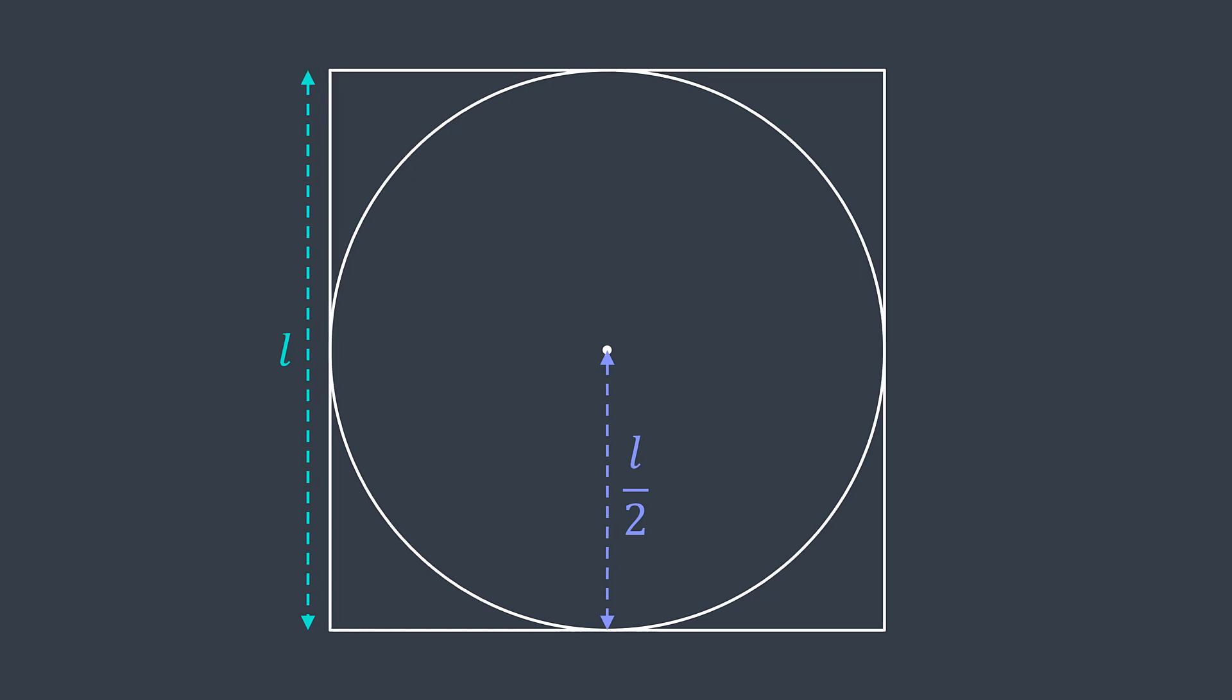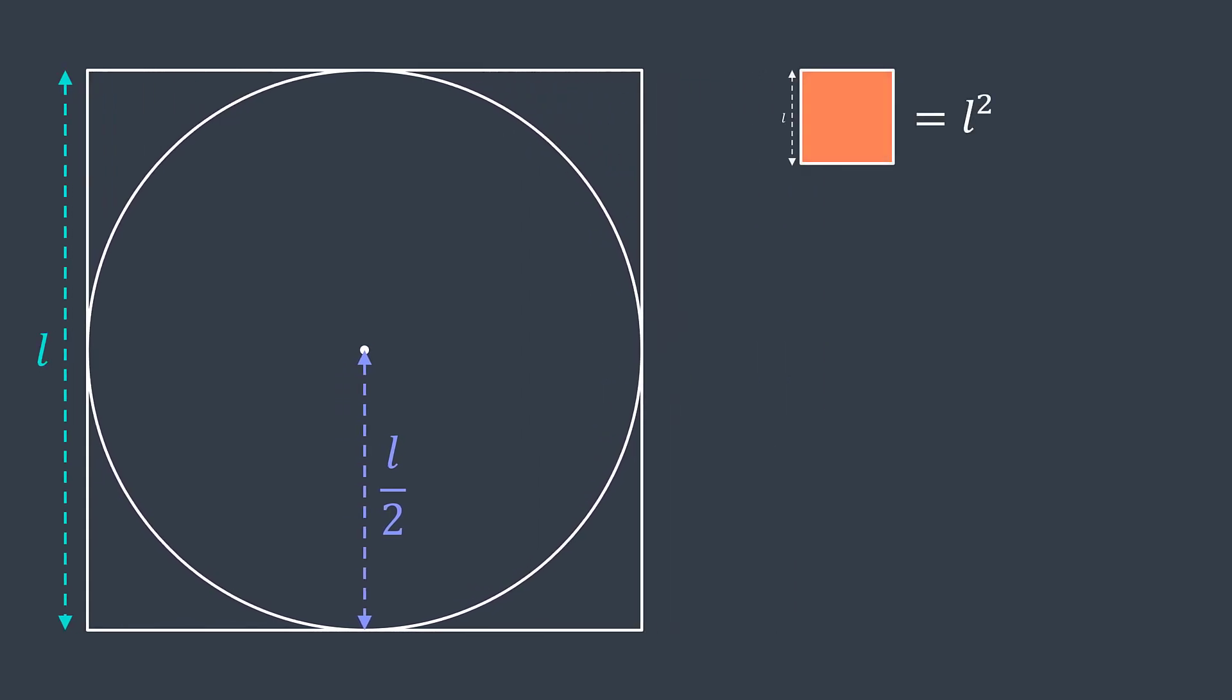The area of a square is its side length squared, L squared. And the area of a circle is Pi times R squared. The radius here is L divided by two, so the area of the circle is Pi times L divided by two squared.